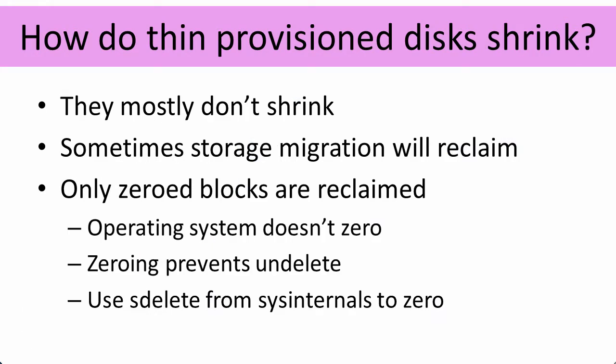Here's the bad news — thin provisioned disks don't shrink, mostly. You don't get back all of the space that's now wasted inside a thin provisioned disk. If you've copied in lots of data and then deleted it from the guest OS, getting that space back is really hard. Sometimes we can do this with a storage vMotion, migrating from one datastore to another, but only if all the blocks that used to contain data have been zeroed. The guest OS doesn't zero blocks when it deletes files — you have to use something like sdelete from Sysinternals. It's a really painful process, so very few people do it. You really need to think of thin provisioned disks as something that gets larger but never gets smaller.